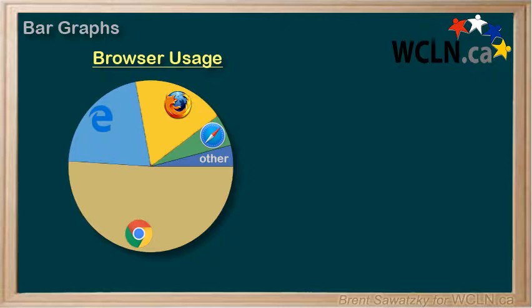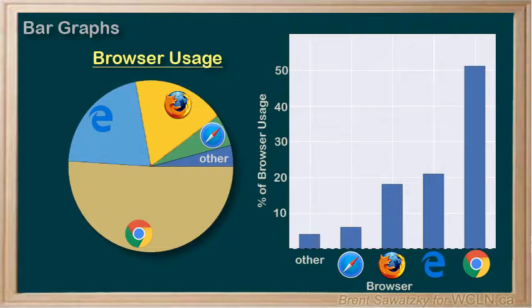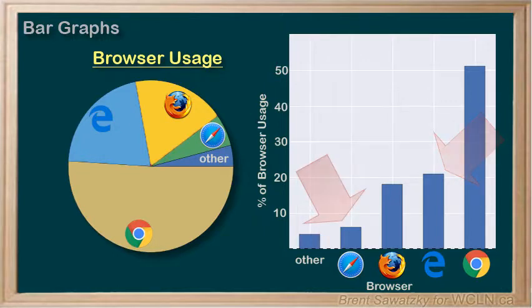If we wanted to talk more about the comparisons between various browsers, perhaps a bar graph would be a better choice. In a bar graph, it's a little easier to see that Internet Explorer is a bit more popular than Firefox, and that Safari is about half as popular as either of those.